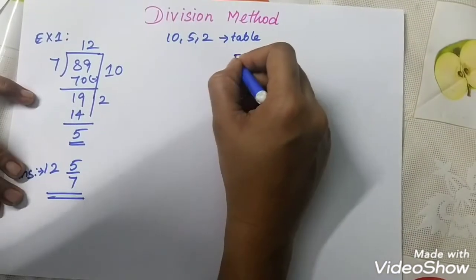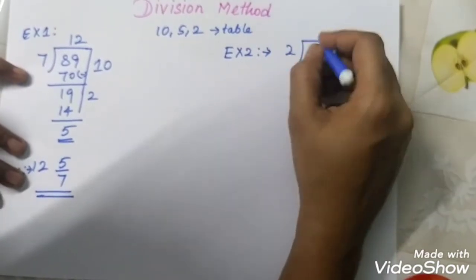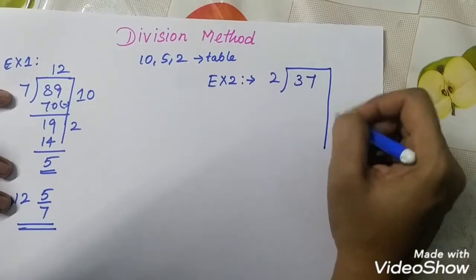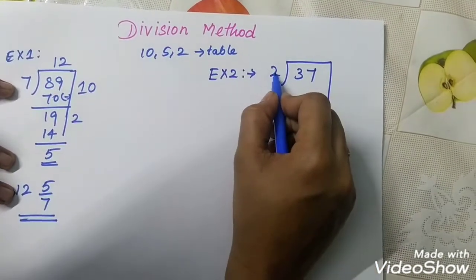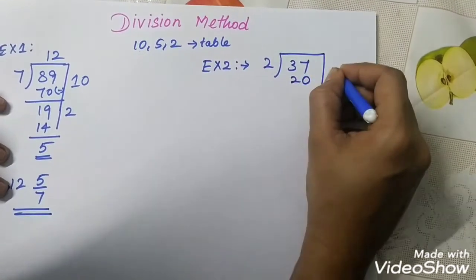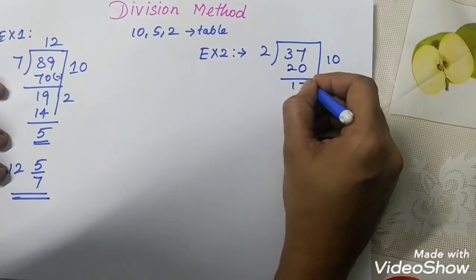Second exercise. We go for second exercise. 2 divided by 37. So, you can take first 2, 10's are 20. So, take 20. 2, 10's are 20. You can subtract 17.